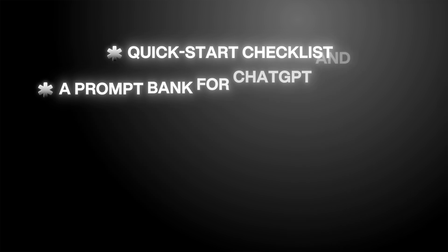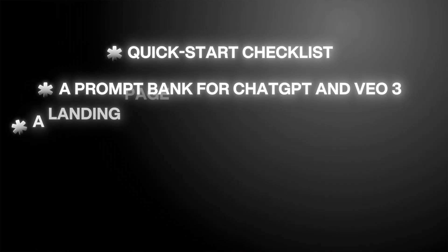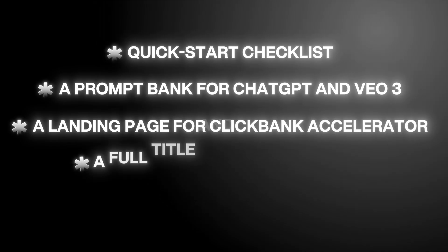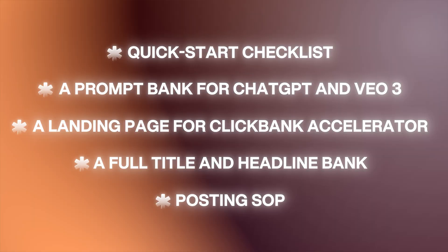The starter kit includes a quick-start checklist, a prompt bank for ChatGPT and VO3 with ready-made hooks and creatives that you can just plug and play, a landing page personalization template for ClickBank Accelerator, a full title and headline bank for your affiliate videos, and even a posting SOP for Shorts and Twitter. It's literally built to cut your setup time in half with done-for-you templates and prompts. The process works if you do the work. You can't copy other people's results, but you can certainly copy their workflow and frameworks.